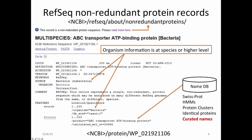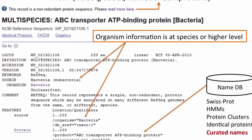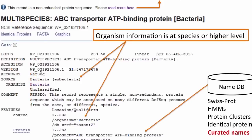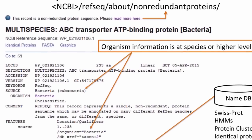Here's a screenshot of one of our non-redundant protein records, and you can see it has the WP accession number. I want to point out that these records are annotated at the lowest common denominator in terms of organism information. In this extreme case, this protein is annotated on genomes of different species, where the lowest common denominator is bacteria, and so that is the organism information carried on this sequence record. You might find others carrying organism information at the genus or species level. There's more information about the non-redundant protein sequences available online at the URL shown at the top of the page.